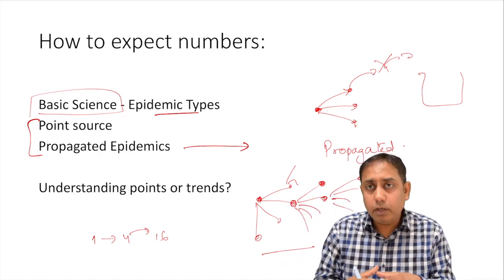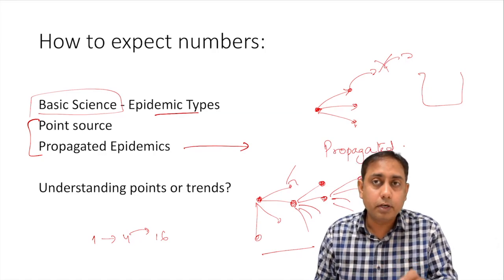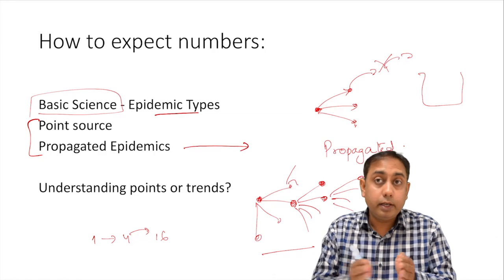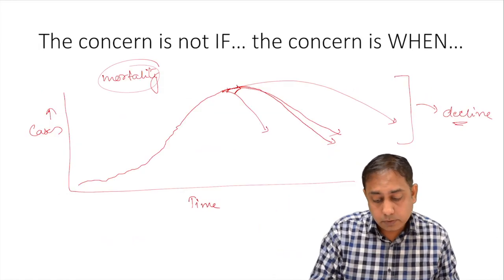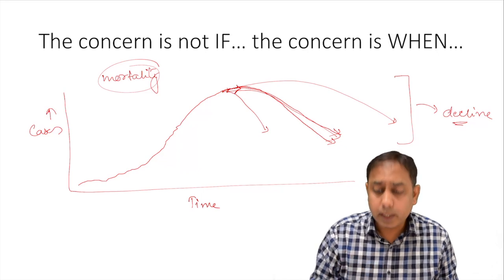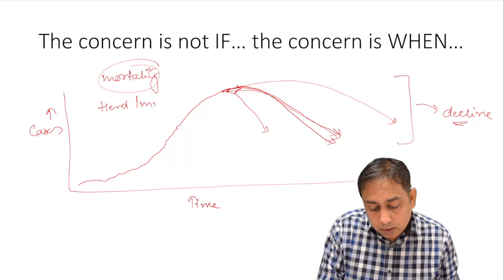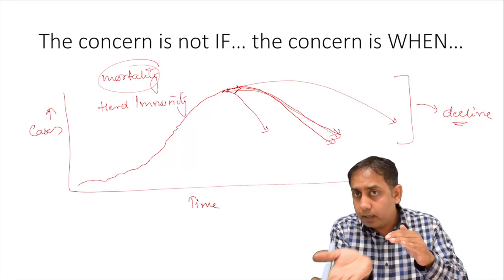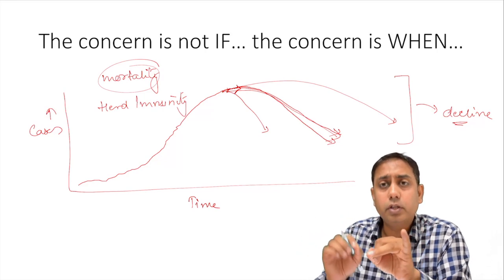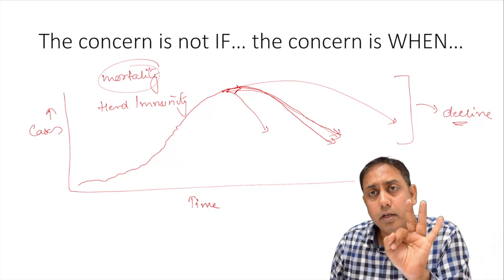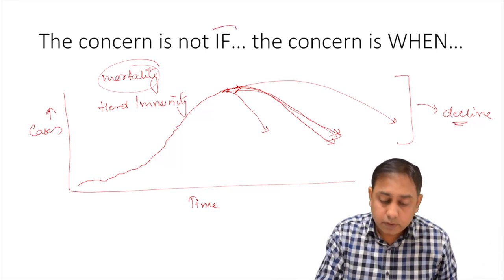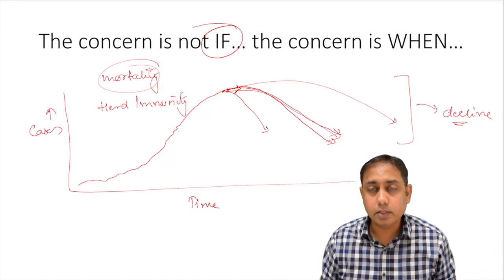Think of it like a jug of water — people keep falling in, and either get cured or die but don't remain in the jug. People who get cured will not be transmitting, since the innate property of a propagated epidemic is transfer of the pathogen from person to person. So the rate of epidemic curve decline depends on killing power, transmissibility, and herd immunity factors. The decline has to happen — the question is when.